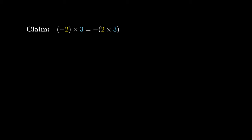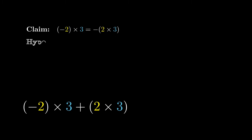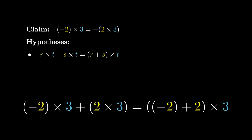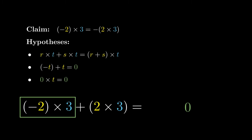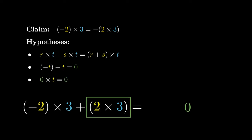What about multiplying a negative number by a positive number? We claim that we can pull out the negative sign. Consider the expression negative 2 times 3 plus 2 times 3. Using distributivity in reverse, negative 2 and 2 are inverses and add to 0. From the previous property, 0 times any number — in particular 3 — must equal 0. This equation tells us that negative 2 times 3 is the additive inverse of 2 times 3, which is precisely the claim we were trying to prove.